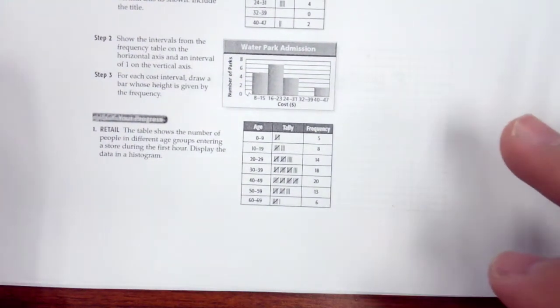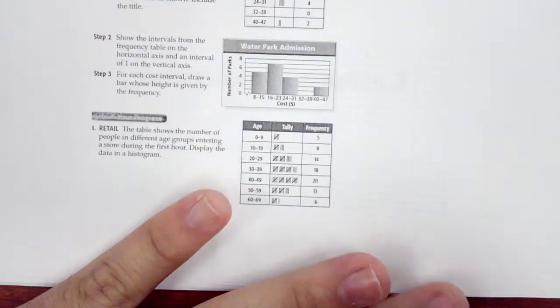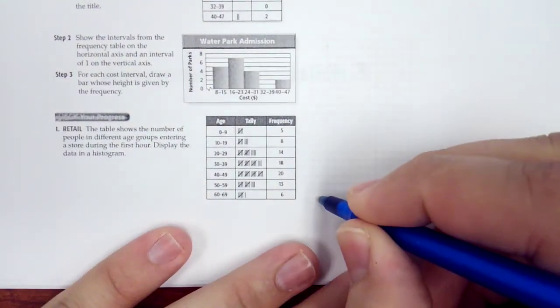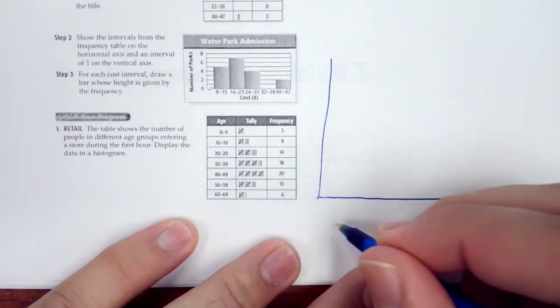Okay, the table shows the number of people in different age groups entering a store during the first hour. Display the data in a histogram. So we need to draw a histogram here. We're going to have age down here.